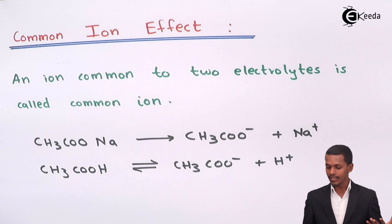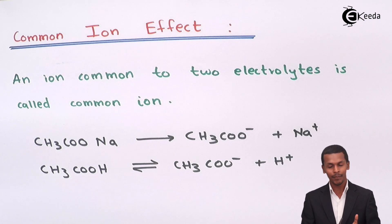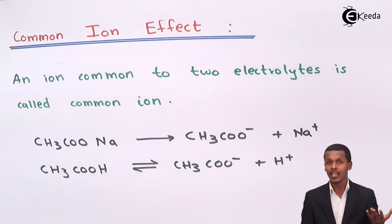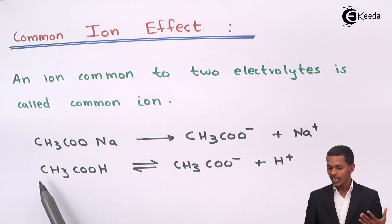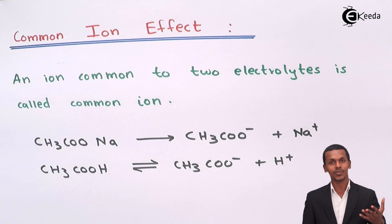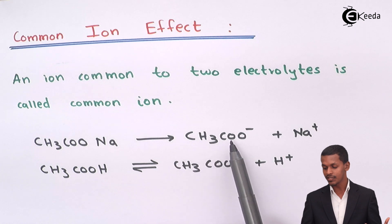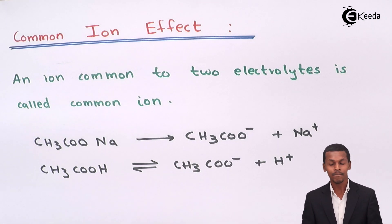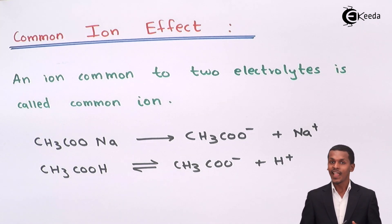Suppose we have a weak electrolyte, CH3COOH (acetic acid). We know it doesn't dissociate completely and so its degree of dissociation is very much less. But even this degree of dissociation can be further reduced by addition of a strong electrolyte that contains the common ion. So if we add sodium acetate, which provides the CH3COO⁻ (acetate ion), the degree of dissociation of acetic acid is suppressed, and therefore its solubility is also reduced.